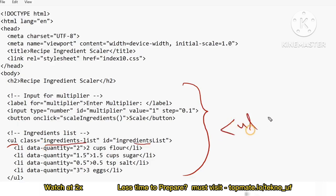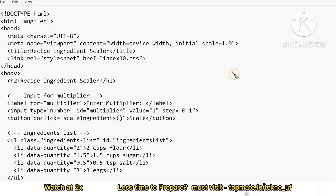The other list items and class attributes are already written for you. You just need to click and include id='ingredients-list' — nothing else. Everything else is already done. If you complete this, you get 25% of the 15%.